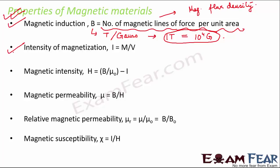Next is intensity of magnetization, which represents the extent to which a substance can be magnetized. It is measured by the expression I equals M by V, where M is the magnetic moment. For a bar magnet, capital M is replaced by small m, which is pole strength.